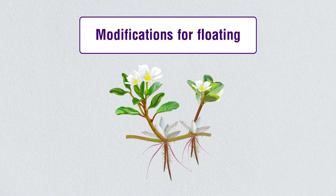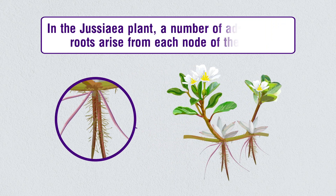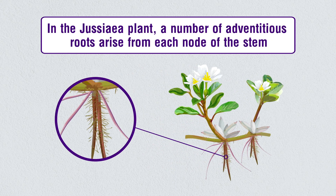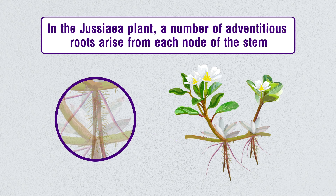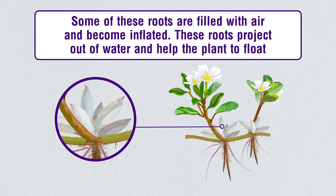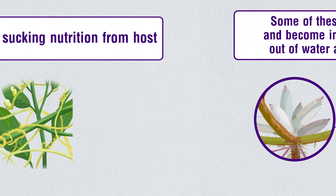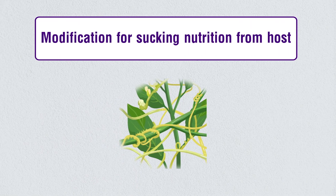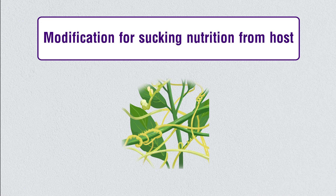In the Jussiaea plant, a number of adventitious roots arise from each node of the stem. Some of these roots are filled with air and become inflated, projecting out of water to help the plant float.